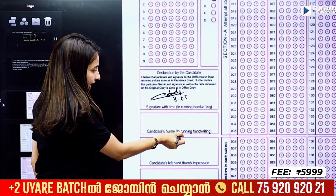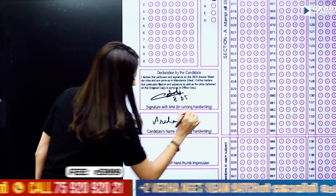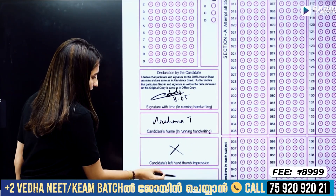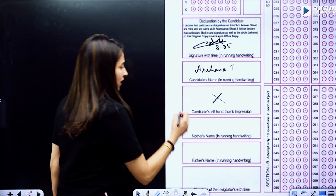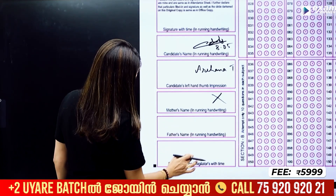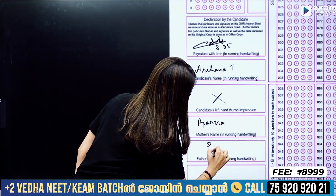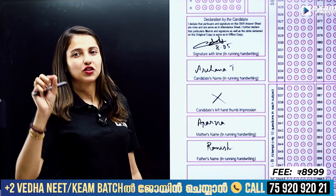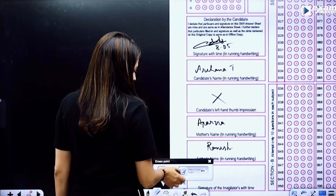The candidate's name must be written in running handwriting. The invigilator's signature with time is also required. In the declaration section, you write your name — for example, Archnati — and the date. You must also provide your left hand thumb impression, your mother's name in running handwriting, and your father's name in running handwriting. One invigilator in your classroom will also sign.